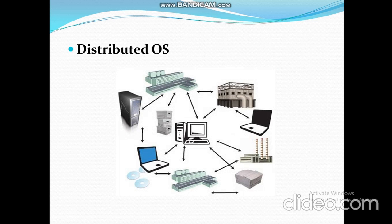Next is the distributed operating system. A distributed operating system runs on a set of computers located in different geographical areas. They are interconnected by a network. It controls these interconnected systems and makes them appear as a single computer. It allows all linked machines to access data and software over a common network from different computers, irrespective of their location on the globe.